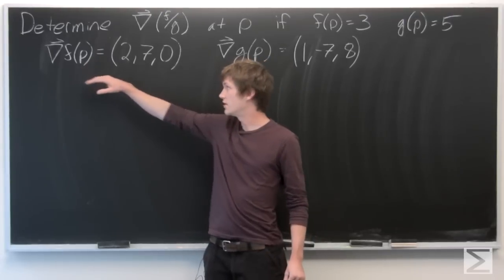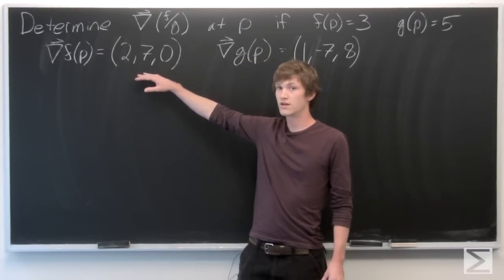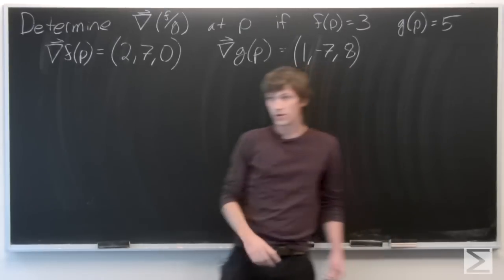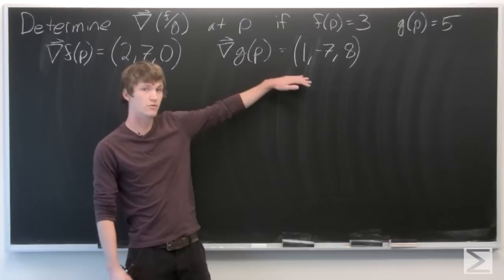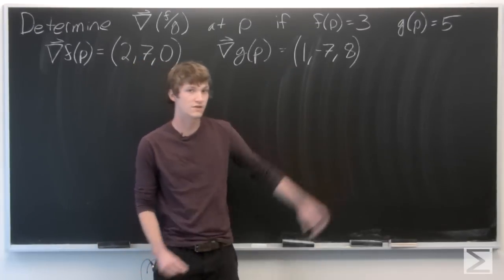the gradient vector of f at p equals the vector (2, 7, 0), and the gradient vector of g at p equals the vector (1, -7, 8).